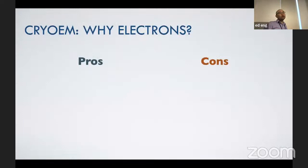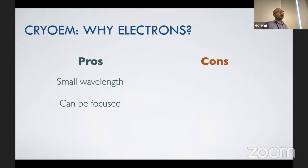Why electrons? There are pros and cons. On the pro side: small wavelengths — you can get picometer wavelengths with electrons, which is why we can achieve atomic resolution. Electrons can also be focused, which gives you a nice, clear, crisp image.